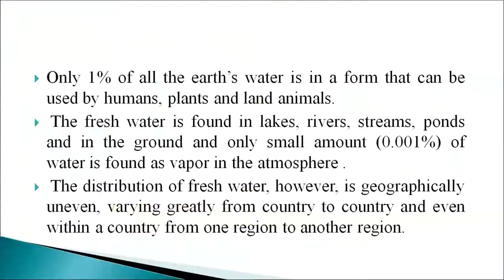Only one percent of all the Earth's water is in a form that can be used by humans, plants, and animals. This fresh water is found in lakes, rivers, streams, ponds, and in the ground. Only a very small amount — about 0.001 percent — is found as vapor in the atmosphere. The distribution of fresh water is geographically uneven, varying greatly from country to country and from one region to another within a country.